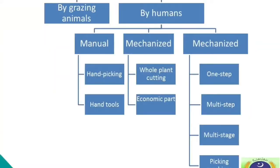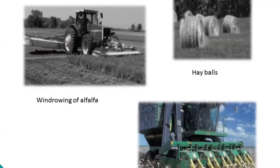Mechanized harvesting can also be divided into one-step harvesting — for example, using combines — and multi-step harvesting, for example cutting the economic part along with other parts and leaving in the field for curing or drying, for example alfalfa. Or it could be multi-stage harvesting — for example, windrowing.